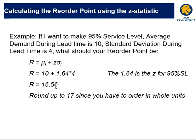My reorder point is therefore 16.56. And because we order in whole units, I would need to round that up to 17.